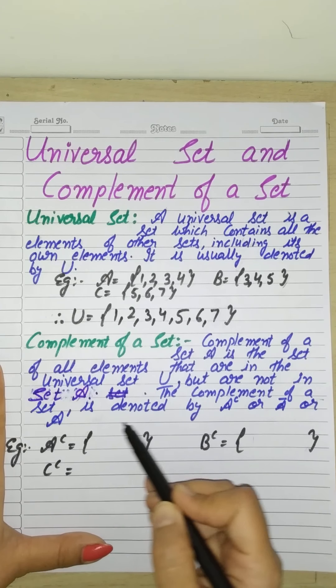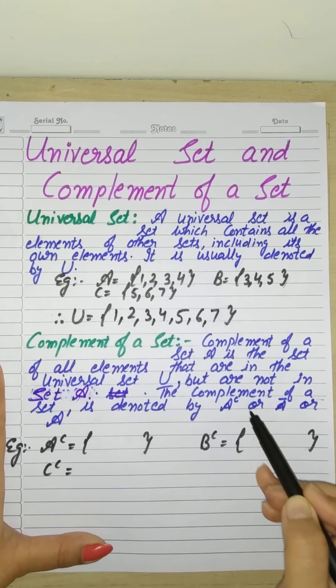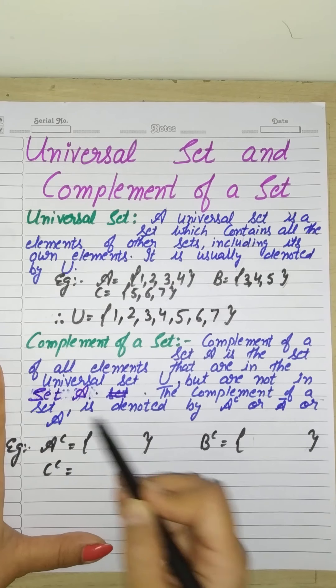The complement of a set is denoted by A with C, A with bar, or A with dash. It can be represented in three ways.